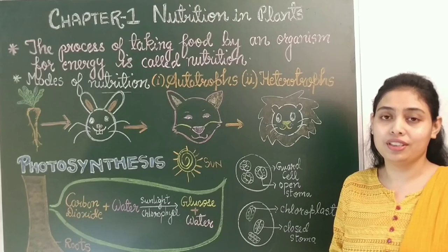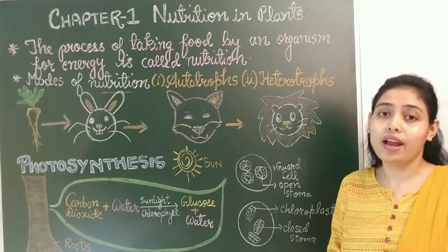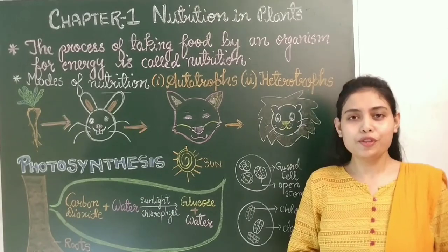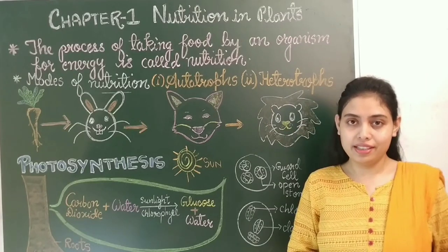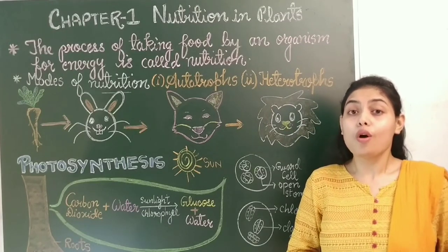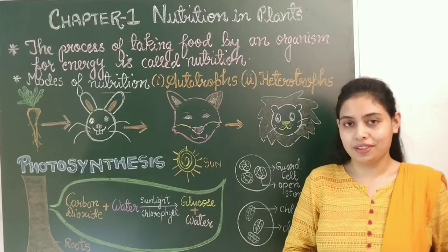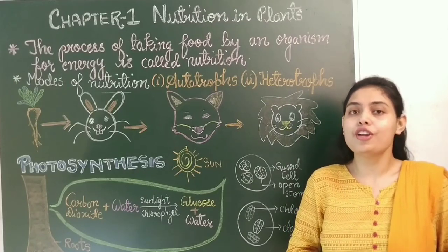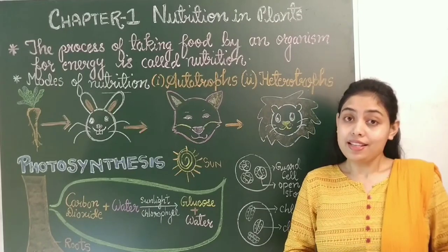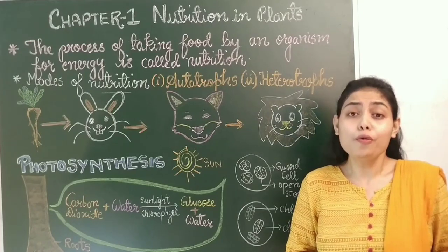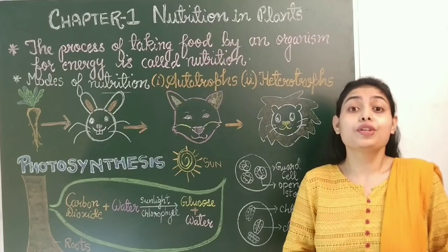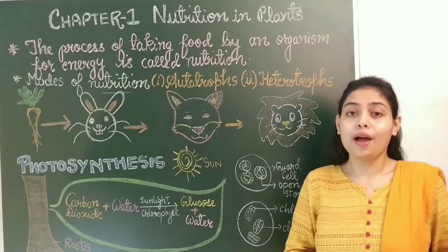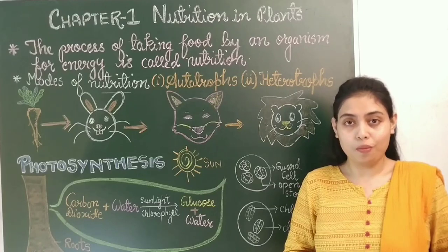We can say animals directly or indirectly depend on plants or other animals for their food, and this mode of nutrition is known as heterotrophic mode of nutrition. Now we will see what is autotrophic mode of nutrition. Here, auto means self, trophe means to nourish. Organisms who can make their own food or can nourish themselves are known as autotrophs.